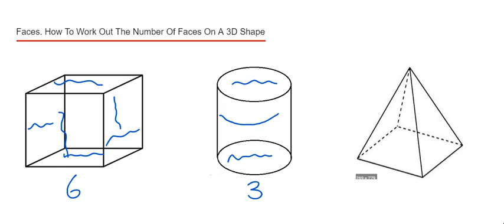Finally, let's do the square base pyramid. On this one, we have the square face at the bottom, that's one, and then we have four triangular faces around the sides of the pyramid. That gives us a total of five faces.